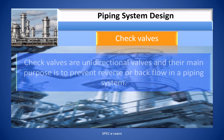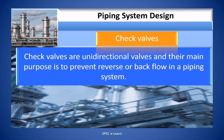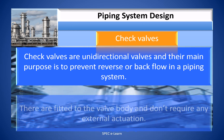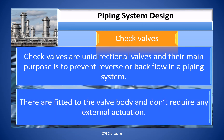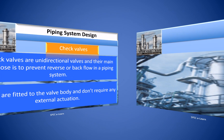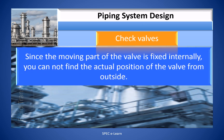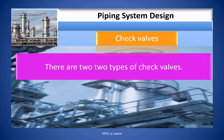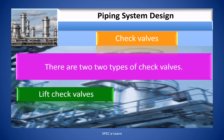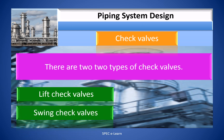Check valves are unidirectional valves and their main purpose is to prevent reverse or backflow in a piping system. They are fitted to the valve body and do not require any external actuation. Since the moving part of the valve is fixed internally, you cannot determine the actual position of the valve from the outside. There are two types of check valves: lift check valves and swing check valves.